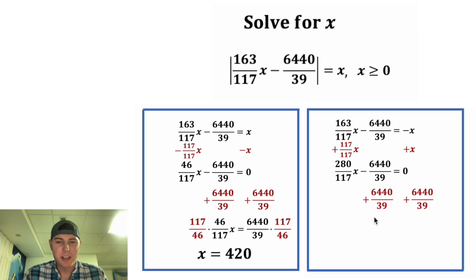We can add this fraction to both sides, so we end up with 280 over 117x is equal to 6440 over 39. We can multiply both sides by the reciprocal, and on the left-hand side we just have x. And on the right-hand side, 6440 times 17 is 753,480. And in the denominator, 39 times 280 is equal to 10,920. After we do this divided by this, we get 69. And that is the second answer to our question.